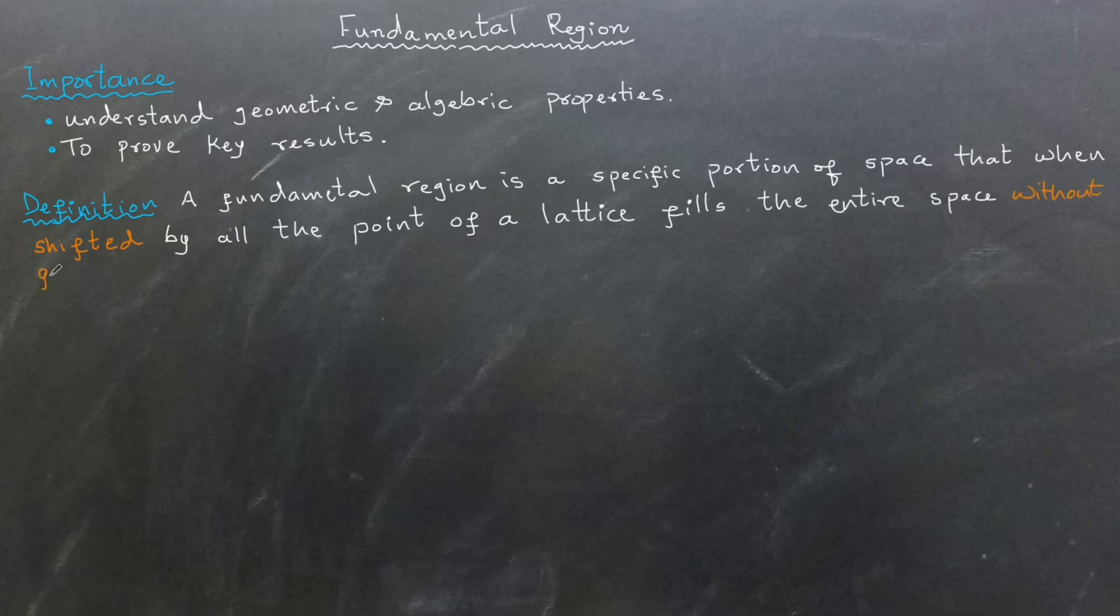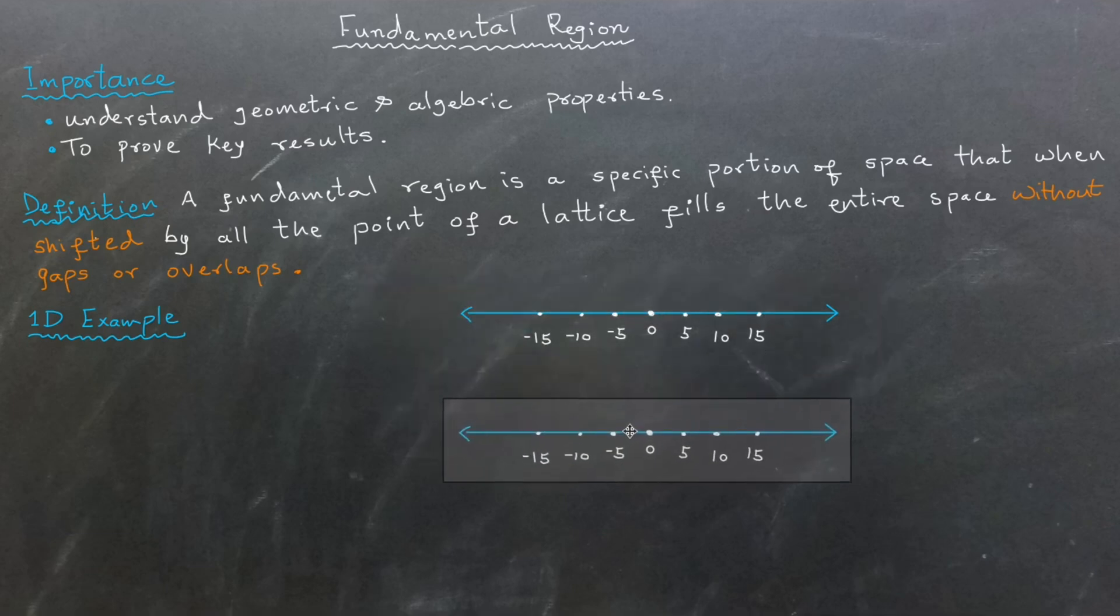To make this clearer, consider an example of a one-dimensional integer lattice. As mentioned in the previous video, a one-dimensional lattice consists of evenly spaced points along a number line. For example, take a lattice where the points are multiples of 5.